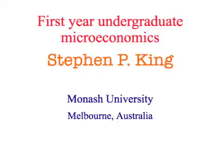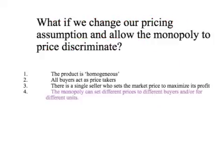Once more, back to first-year undergraduate microeconomics. Our topic is monopoly price discrimination. We've kept our first three assumptions for a monopolist: homogeneous product, buyers act as price takers, and a single seller who sets a market price to maximise profit. But we've got a different fourth assumption. Instead of the monopoly setting the same price for all units to all buyers, the monopoly can set different prices to different buyers and/or for different units.